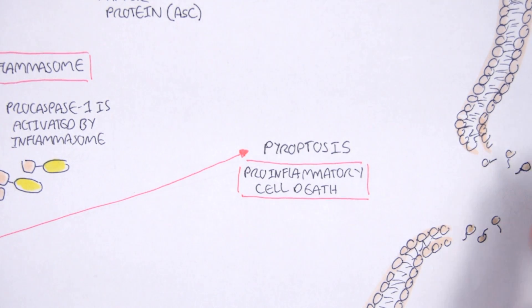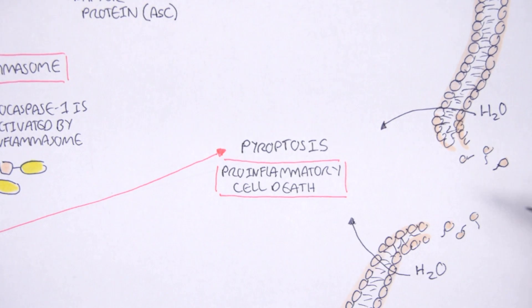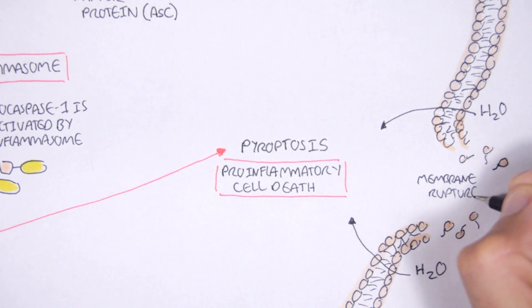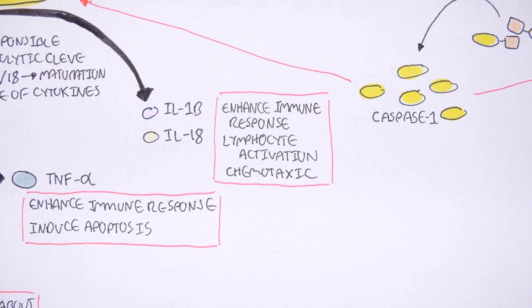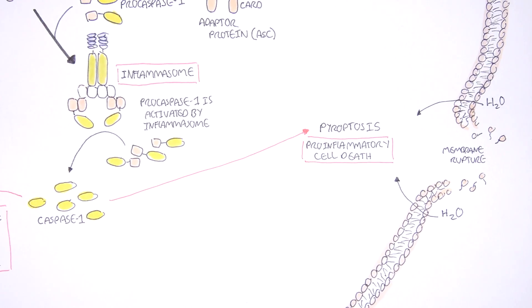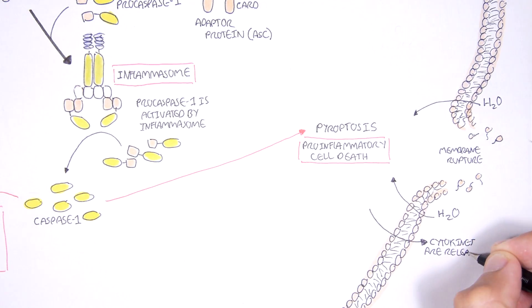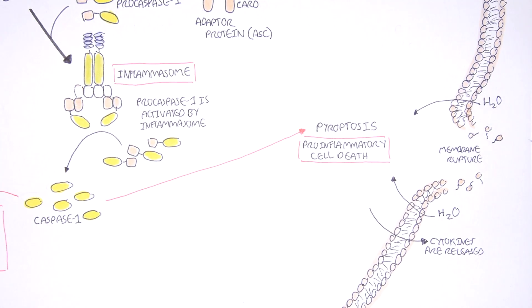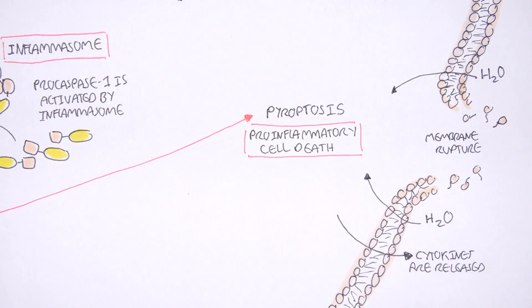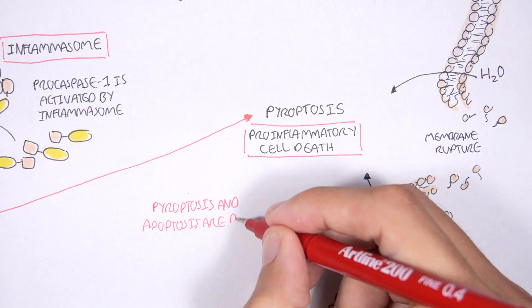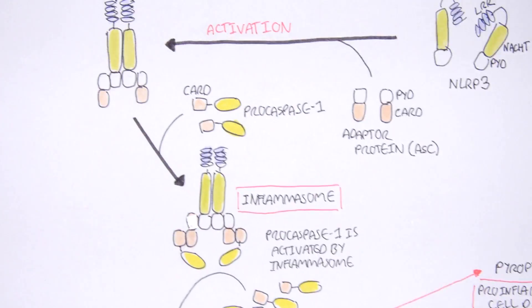In pyroptosis, water begins flooding the cell, leading to cell swelling and then membrane rupture. At the same time, the cell releases all the inflammatory cytokines within it that were activated by caspase-1. This is what distinguishes pyroptosis from apoptosis.